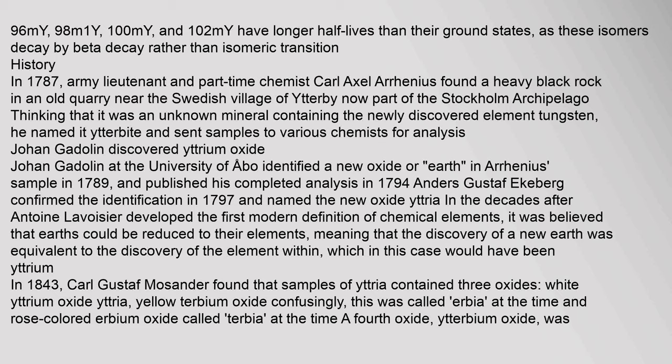In 1787, army lieutenant and part-time chemist Carl Axel Arrhenius found a heavy black rock in an old quarry near the Swedish village of Ytterby, now part of the Stockholm archipelago. Thinking it was an unknown mineral containing the newly discovered element tungsten, he named it Ytterite and sent samples to various chemists for analysis. Johan Gadolin at the University of Åbo identified a new oxide in Arrhenius' sample in 1789, and published his completed analysis in 1794. Anders Gustav Ekeberg confirmed the identification in 1797 and named the new oxide yttria. In 1843, Karl Gustav Mosander found that samples of yttria contained three oxides: white yttrium oxide (yttria), yellow terbium oxide (confusingly called erbia at the time), and rose-colored erbium oxide (called terbia at the time).